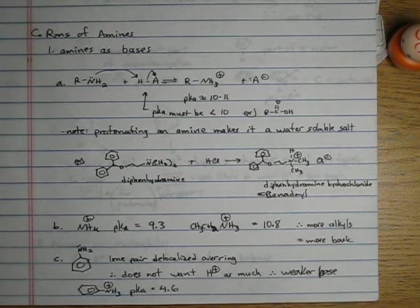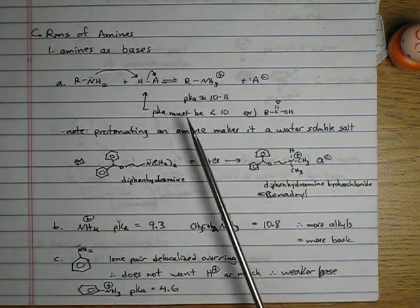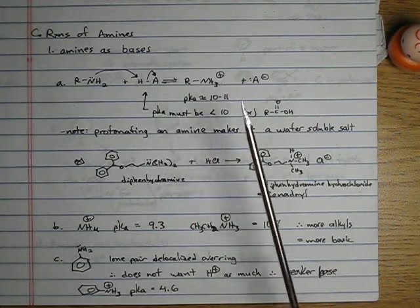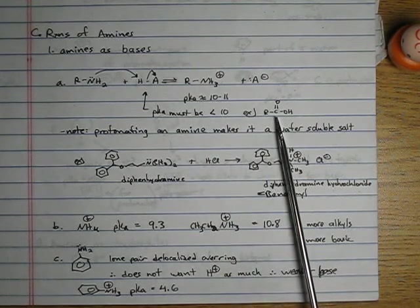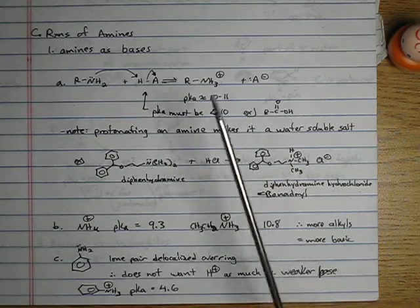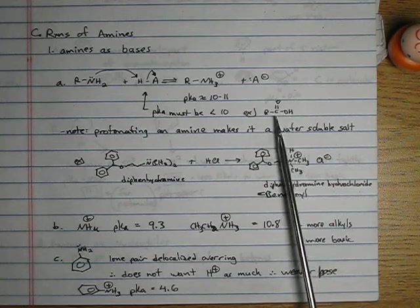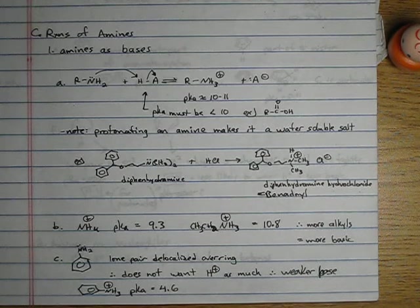The main time you see it, and you saw it throughout Gen Chem 2 and Gen Chem 1, is when you have a carboxylic acid. Carboxylic acid plus an amine, the amine will take off this hydrogen to make the carboxylate. Very common.